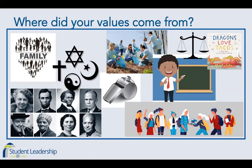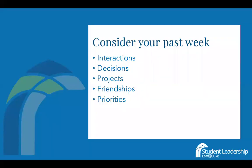Let's move towards how you actually can use these values now. You may very well want to pull up your list of five values and consider them before anything you do, but that's pretty time consuming and kind of exhausting. A better technique is to spend some time once in a while — maybe each week — thinking back on your week: interactions you had, decisions you made, projects you engaged in, your friendships, priorities, etc. Then compare your values with those things. Do each of your behaviors show your values to others? If someone else were to look at the same week of your life, would they be able to name your values based upon your actions?